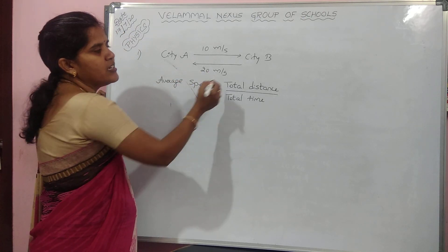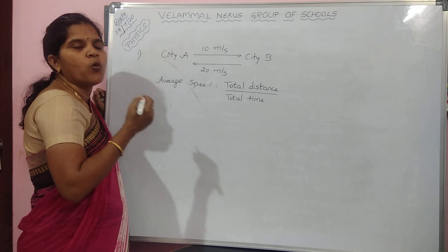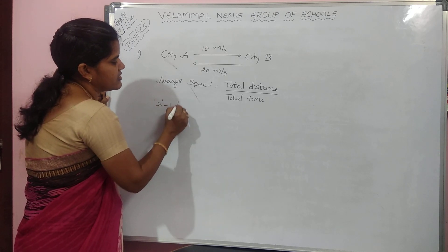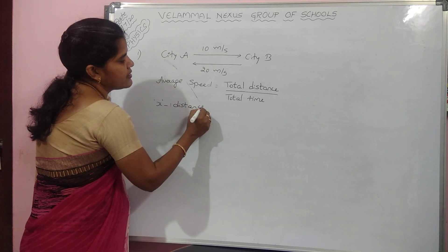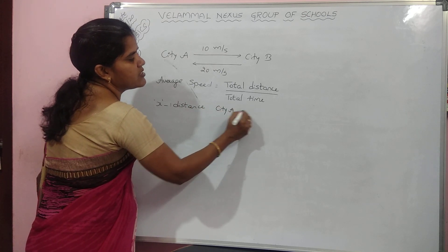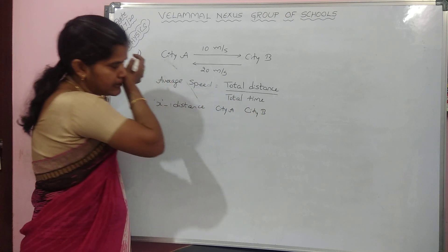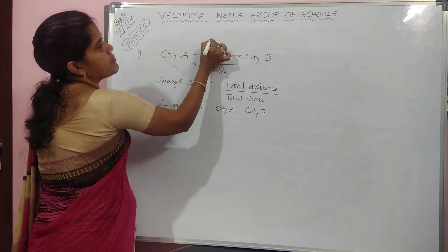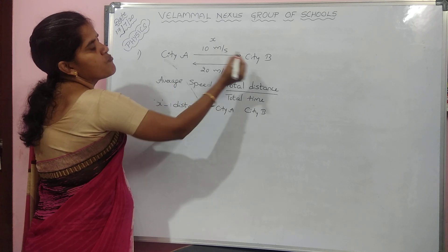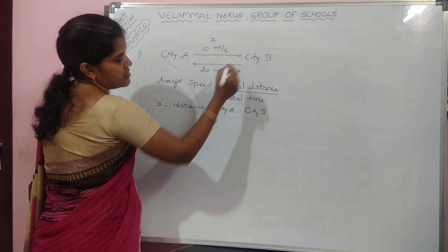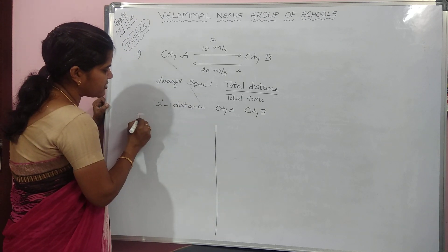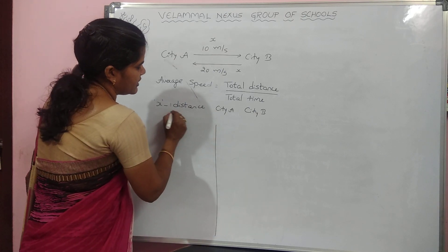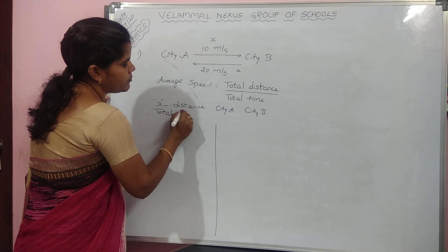How can we find out distance and time? If we don't know anything, we will consider it as X. So let us consider X as the distance between city A and city B. For the first trip, the body has travelled X distance. For the second trip also, it has travelled X distance. So the total distance travelled is nothing but 2X.